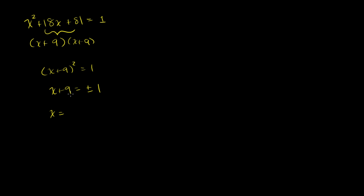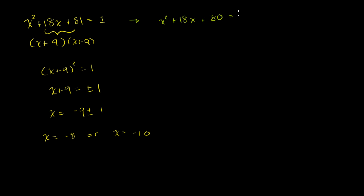So x is equal to negative 9 plus or minus 1. That means x could be equal to negative 9 plus 1, which is negative 8, or x could be equal to negative 9 minus 1, which is negative 10. You could have done this the traditional way: subtract 1 from both sides to get x squared plus 18x plus 80 equals 0. Since 8 times 10 is 80 and 8 plus 10 is 18, you'd get x plus 8 times x plus 10 equals 0, so x equals negative 8 or negative 10. That was good warm up — now I think we're ready to tackle completing the square.